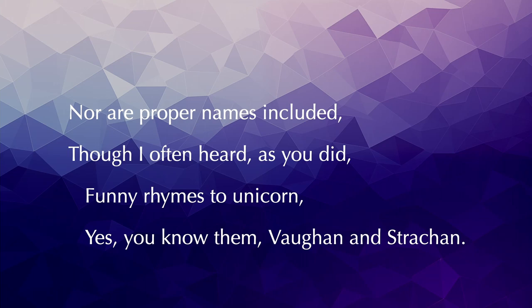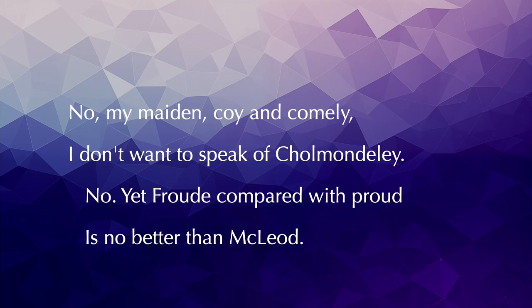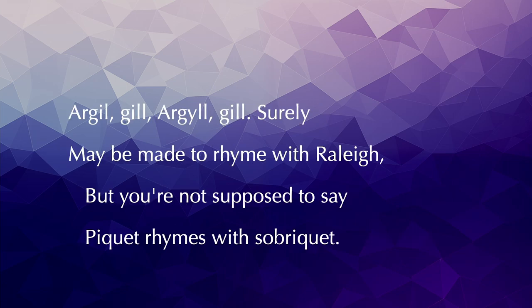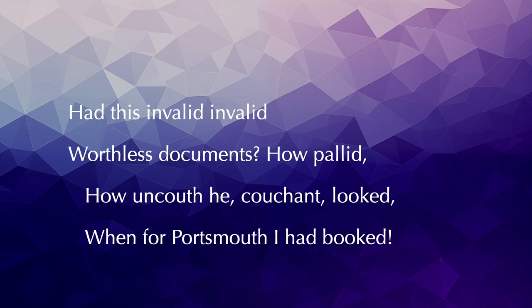Yes, you know them — Vaughan and Strachan. No, my maiden, coy and comely, I don't want to speak of Cholmondeley. Nor yet fruit compared with proud is no better than Macleod. But mind trivial and vile, tripod, menial, denial, troll and trolley, realm and ream, schedule, mischief, schism and scheme. Agile, gill, argyle, gill — surely may be made to rhyme with roly. But you're not supposed to say piquet rhymes with sobriquet.